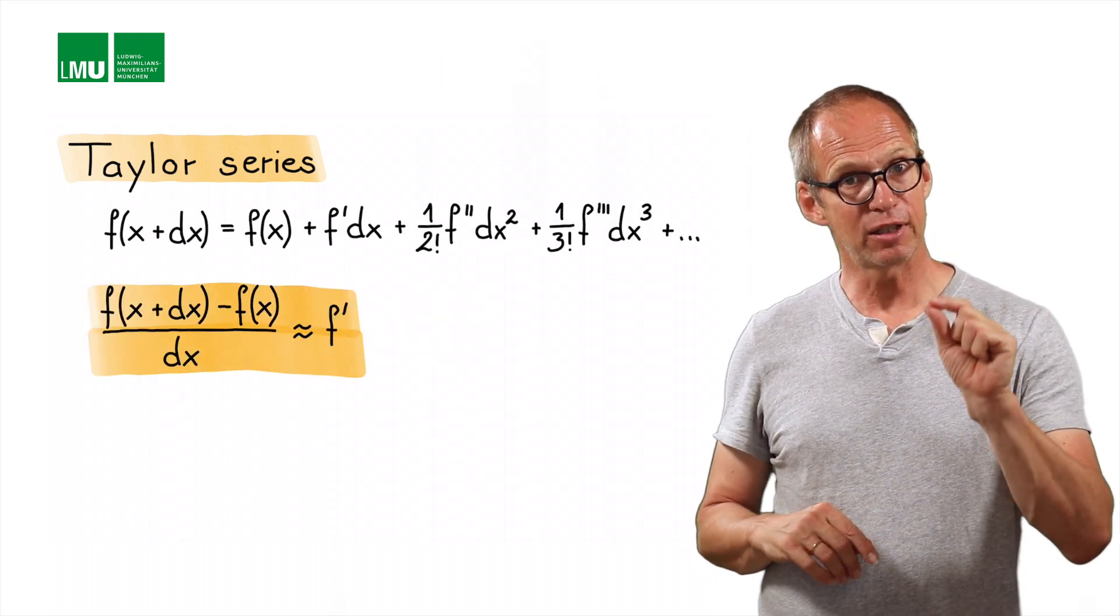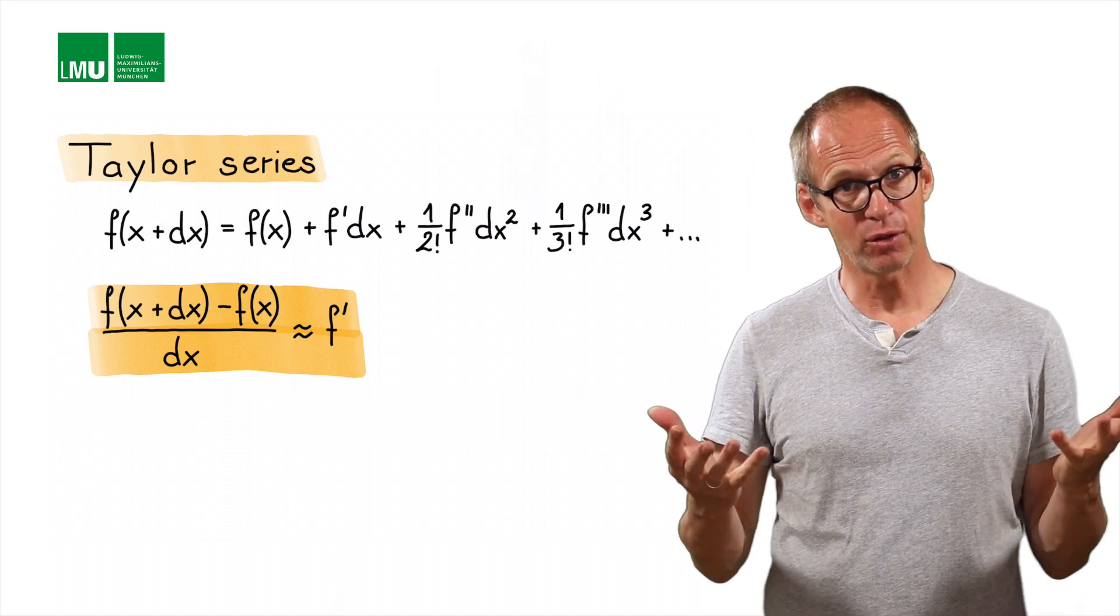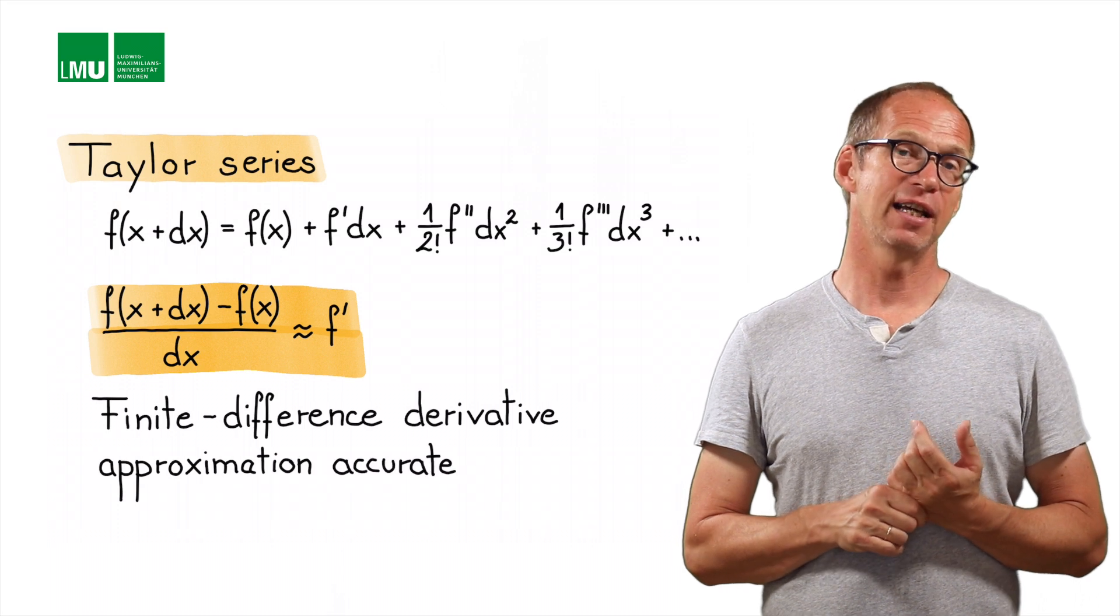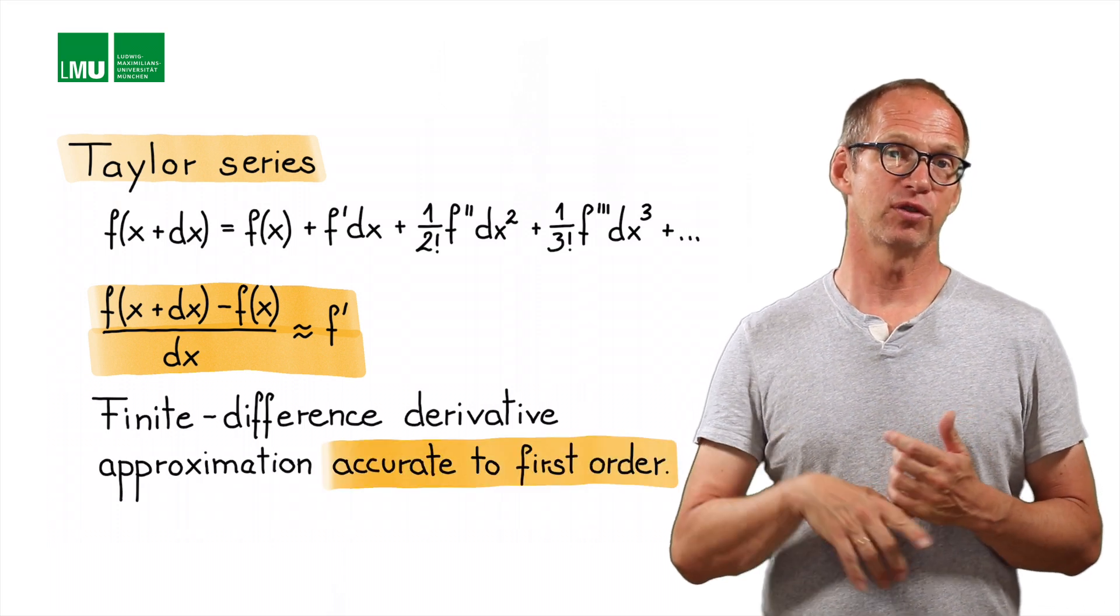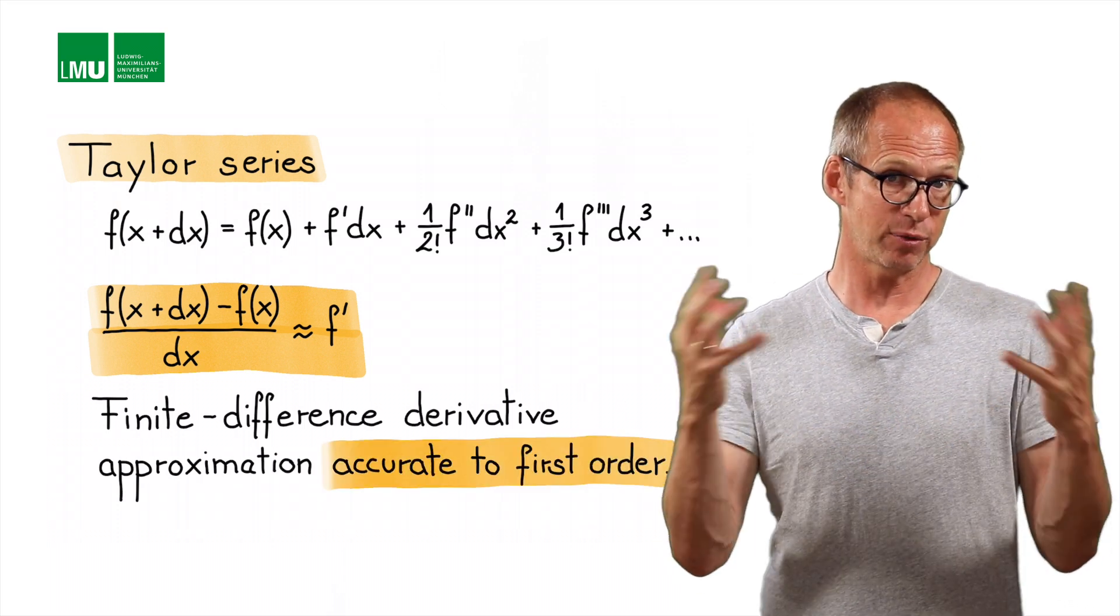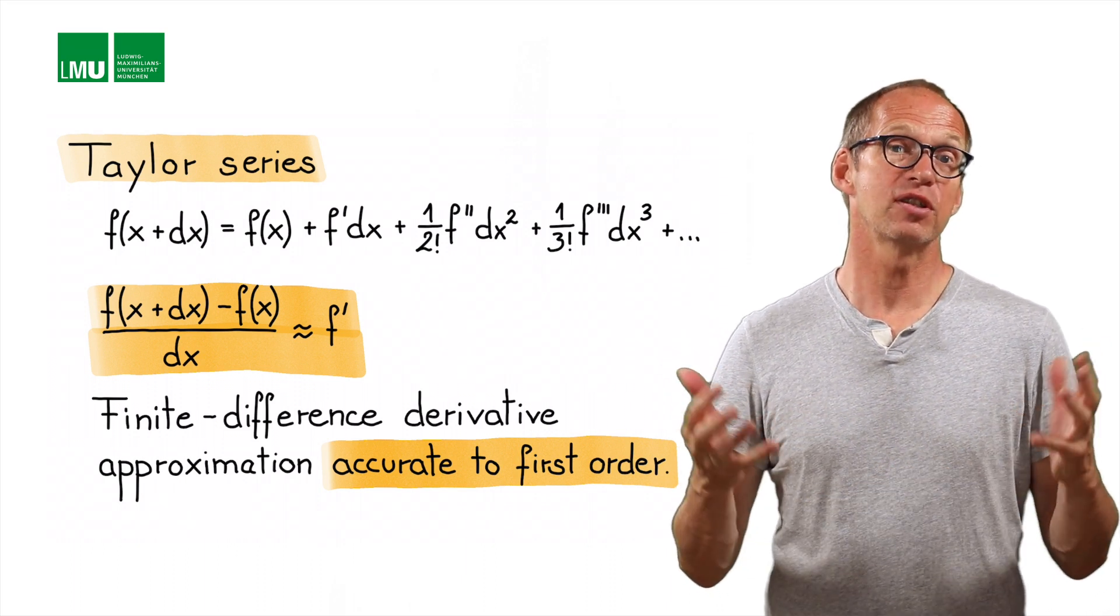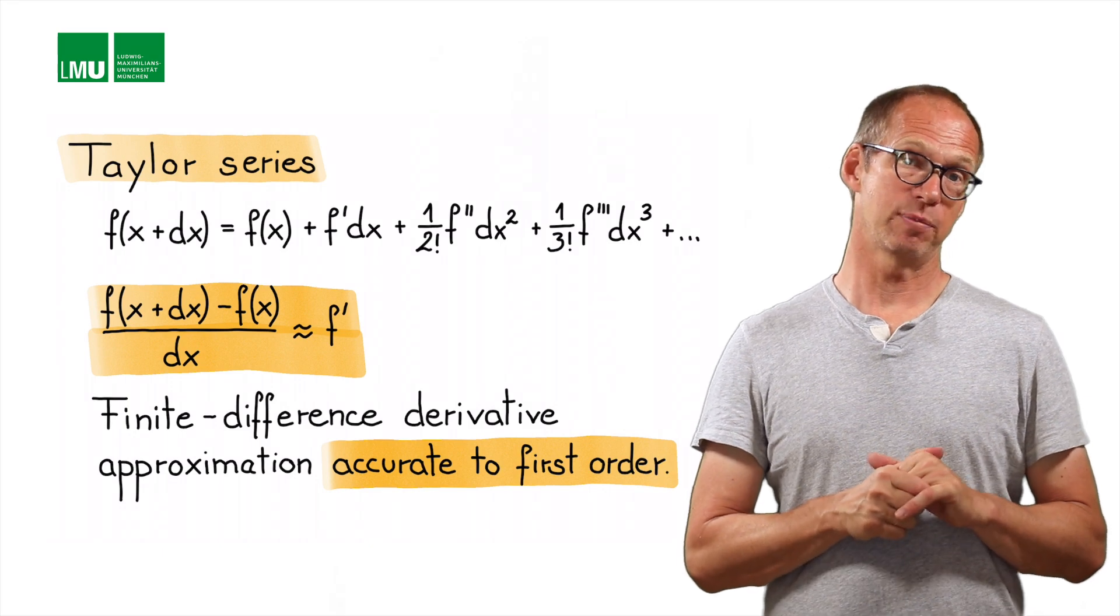But now we have a quantitative answer to the question how accurate we are: we're actually accurate to first order in dx. That's very important later to quantify the solution of numerical approximations to partial differential equations, at least for the finite difference method.